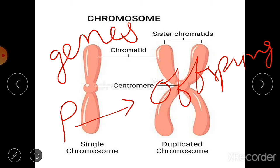In a cell that is not dividing, DNA is present as part of the chromatin material, as we just saw.